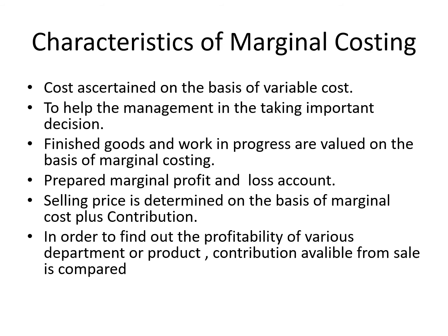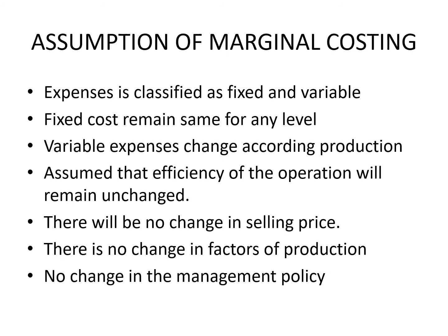From these characteristics and definitions, we study some assumptions necessary before calculating marginal cost. First, all expenses can be classified as fixed and variable; in actual practice, such perfect classification is not possible. Second, fixed costs remain stable for any level of production — they do not change irrespective of increase or decrease in production. Third, variable expenses change in direct proportion to changes in the level of production; if production is doubled, then the variable cost will also double.